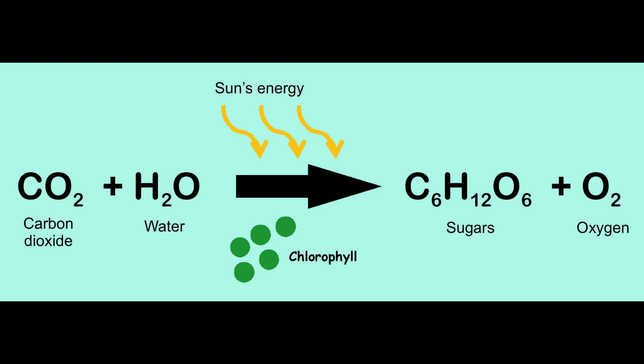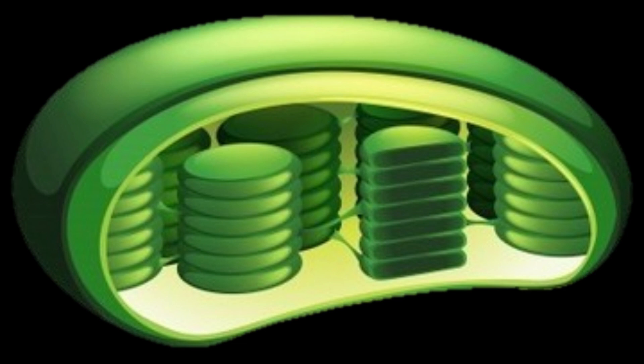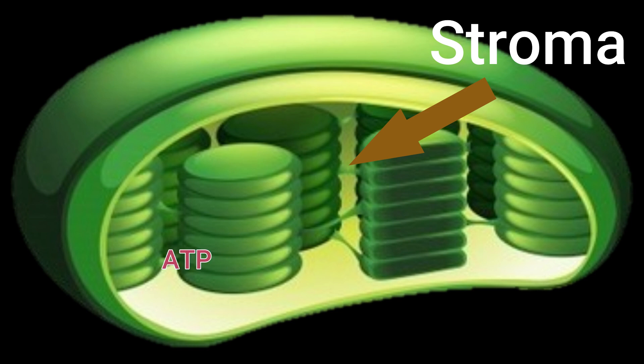So now we're in the middle of this equation, and we're focusing on glucose. This Calvin cycle takes place in the stroma, which is the inner space of the chloroplast organelle. Though we already have ATP and NADPH from the first step of photosynthesis inside the stroma, how did we get carbon dioxide into the stroma too?